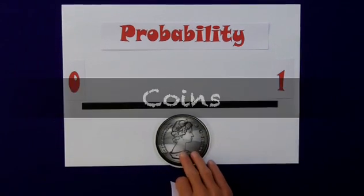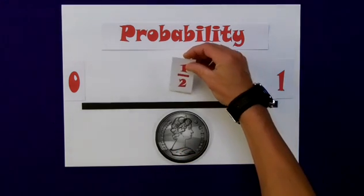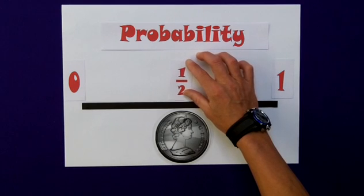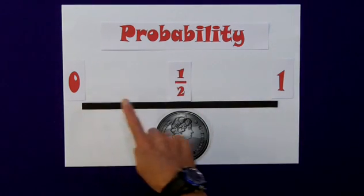A coin, for instance, has two possible outcomes, either heads or tails. So I have a one in two chance of guessing that correctly. In terms of the probability scale, one-half, one out of two, can be placed in the center from zero to one.